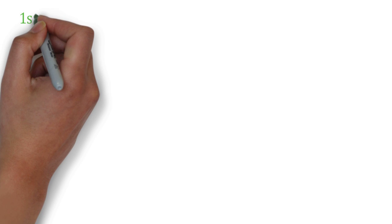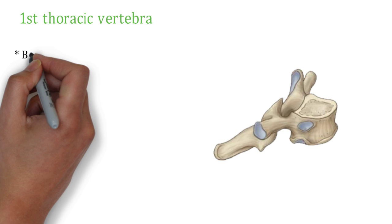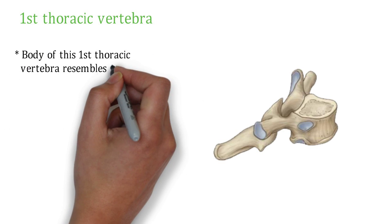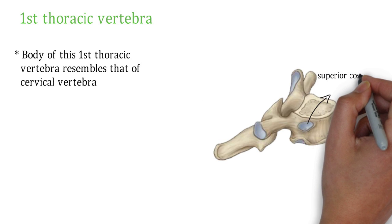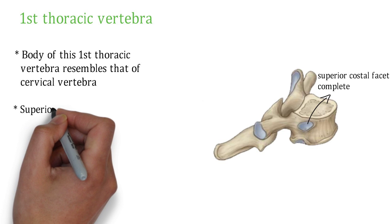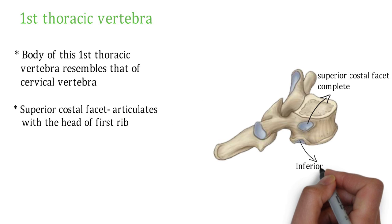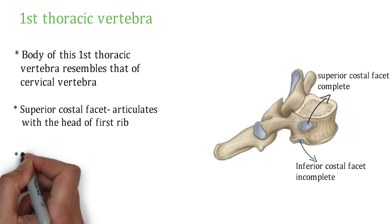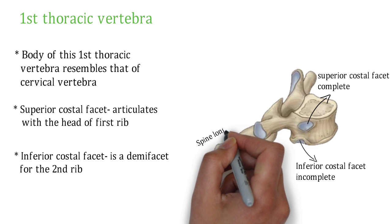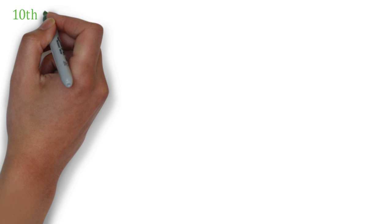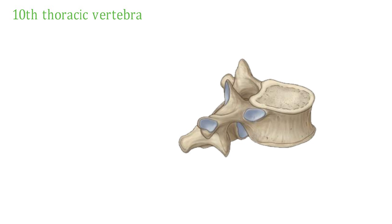Now let's see the atypical skeletal structure of thoracic vertebrae. The first thoracic vertebra — in lateral view, the body resembles that of a cervical vertebra. The superior costal facet is complete and articulates with the head of the first rib. The inferior costal facet is incomplete — it is a demi-facet for the second rib. The spine is long and horizontal.